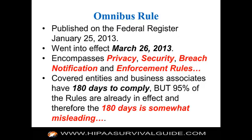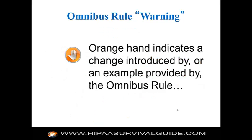The net net is that covered entities and business associates have 180 days to comply with the omnibus rule, but 95% of the rules were already in effect. It's only the approximately 5% of new regulations introduced by the omnibus rule that you get this 180-day grace period to comply with. A key takeaway is that the omnibus rule was really 95% already in effect. Anytime you see an orange hand on these slides, it indicates a change introduced by or an example provided by the omnibus rule.